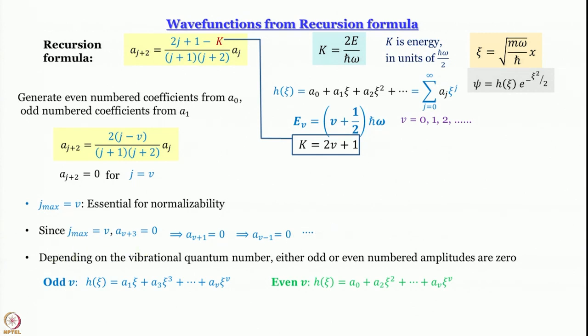We have been able to write two separate terminated series for the function h of psi. For odd values of v, h of psi equals a_1 psi plus a_3 psi cube plus a_5 psi to the power 5, and the last term is a_v psi to the power v. For even values of v, we have h of psi equal to a_0 plus a_2 psi square plus a_4 psi to the power 4, and the last term is again a_v psi to the power v.